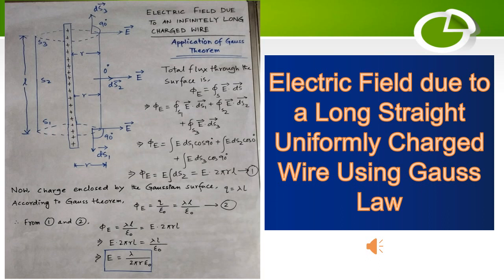The angle between ds3 and E will be 90 degrees, angle between ds1 and E will be 90 degrees, and angle between ds2 and E will be 0 degrees.